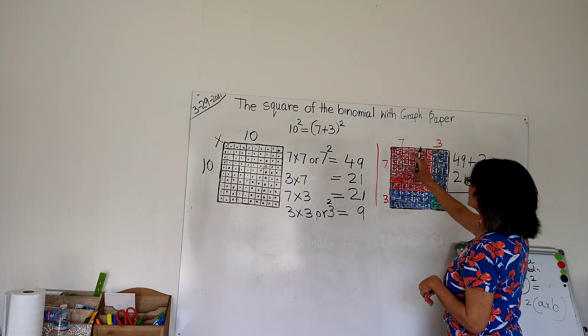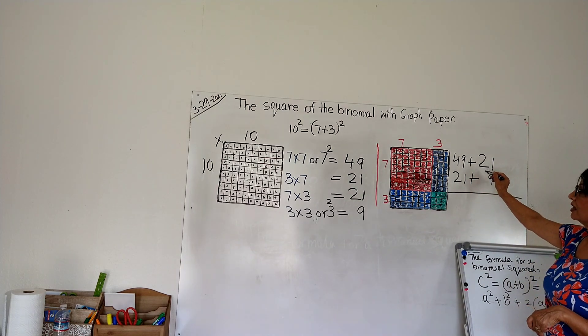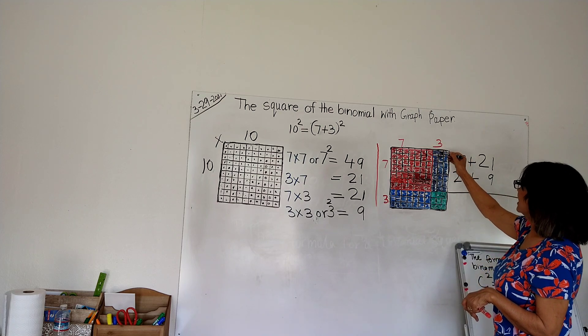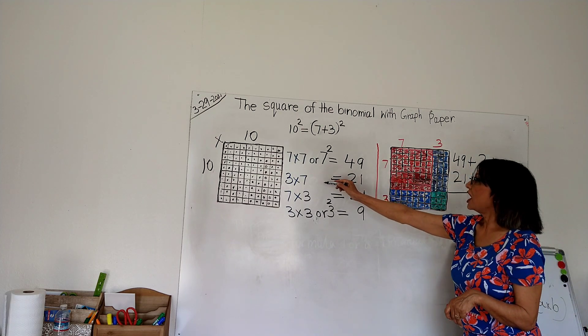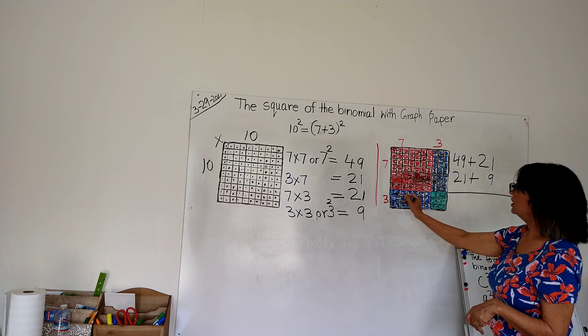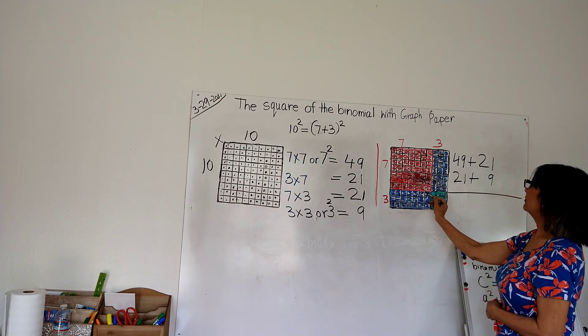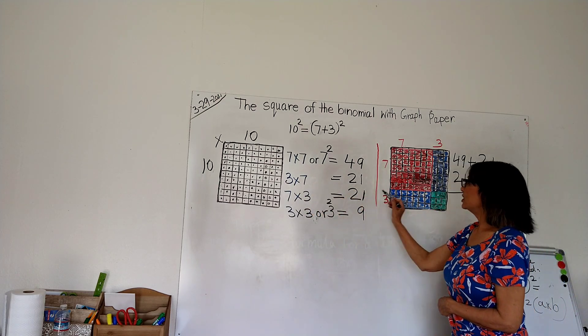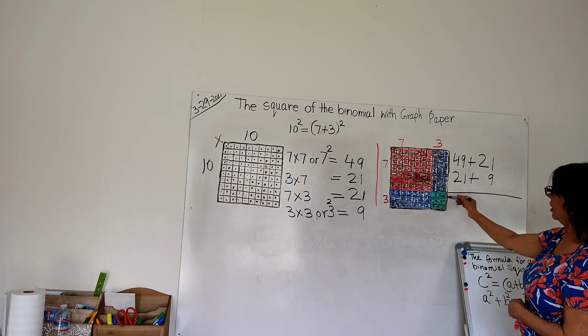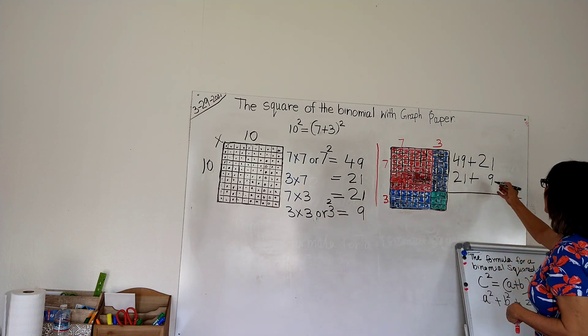Now let me go over again. We have 49, we know this is the square of 7. We have 21 here, we know this came from the rectangle that is 3 on this side and 7 on this side: 3 times 7 equals 21. We bring it here. And then again we have another rectangle here, 3 down and 7 across: 7 times 3 equals 21, so we got 21 here.